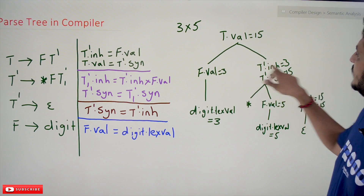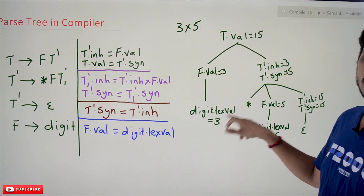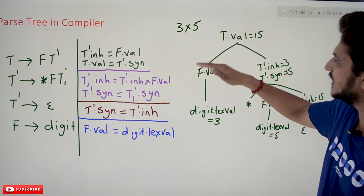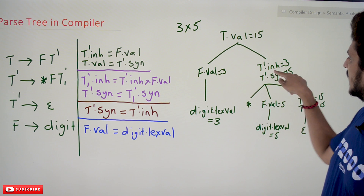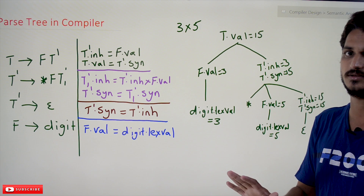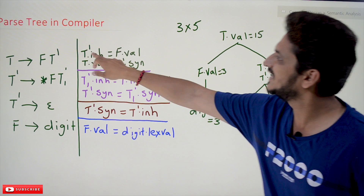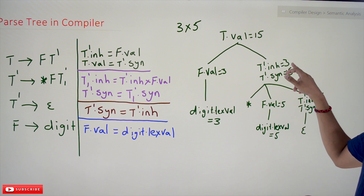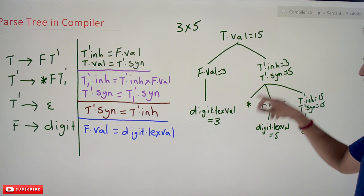Here, T → F T'. F is elaborated with digit — the digit value x = 3 is encountered first, so x value equals 3. This value of 3 is given to F dot value. After evaluating F, it passes that value forward. In the production T → F T', T' has two variables: T' dot inherited = 3 and T' dot syn = 15. How we get 15 we will understand in the next class on dependency graphs.